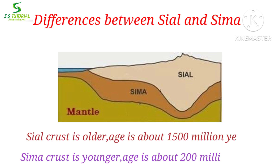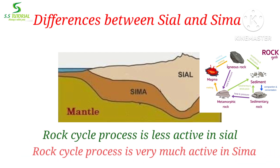Sial crust is older — its geological age is much older, having originated almost 1,500 million years ago. Sima crust is much younger, having originated only about 200 million years ago. The rock cycle process is very much active in Sima, whereas it is less active in Sial compared to Sima.